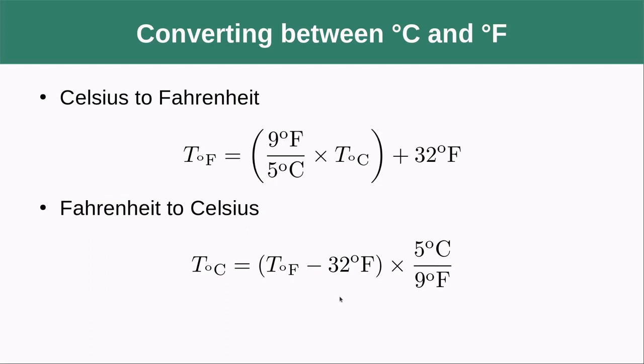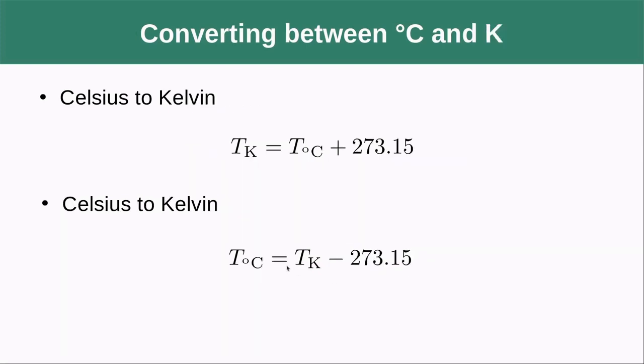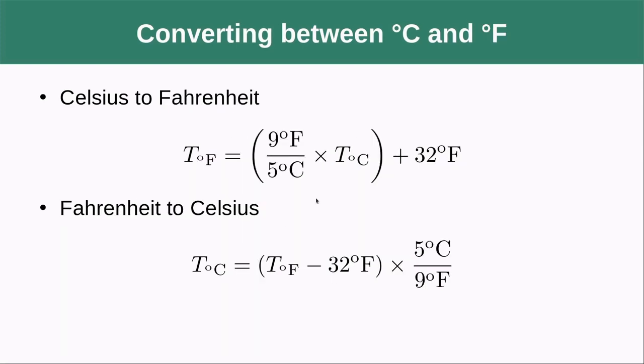Over here you're going to start off with degrees Fahrenheit, you're going to subtract degrees Fahrenheit, you're going to multiply by this ratio, you're going to cancel those degrees Fahrenheit, and then you're going to have degrees Celsius for your final answer.